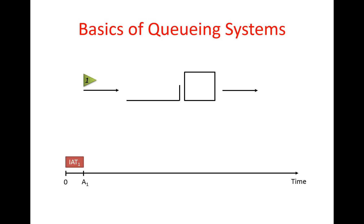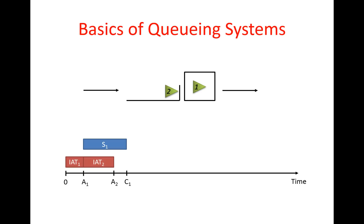When the first entity arrives, since we started with an empty system, it can go directly to the server without waiting in any line. Time evolves and at some point our second entity arrives. Since the server is busy, the second entity has to go to the queue and wait. At some point the server finishes processing the first entity — I mark this as completion C1 — and the service time S1 is the duration between the arrival of the first entity and completion of its service.